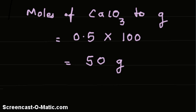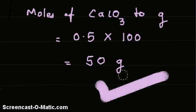That is the answer. That is the mass of calcium carbonate required to produce 14 grams of calcium oxide with 50% yield.